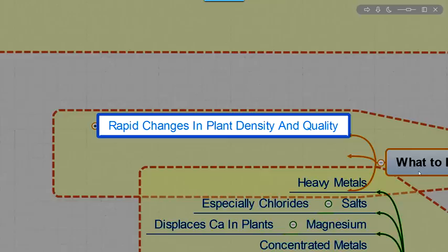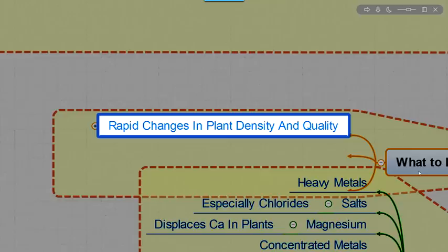So what you're going to be looking for? You're going to be looking for rapid changes in plant density and quality. That's an area that moves from seeing some brush, moving to no brush, and maybe even just flat sand. There's nothing around.